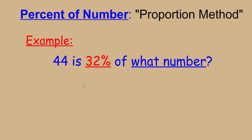32 percent can actually be written as 32 per 100, in which 32 represents the part and 100 represents the whole. This is a ratio of part to whole.